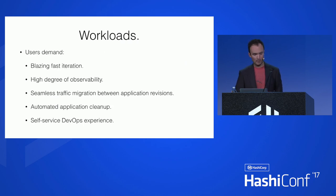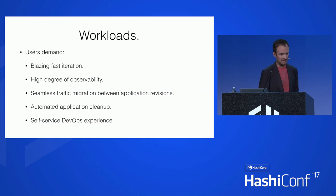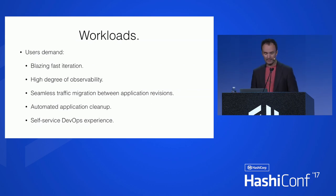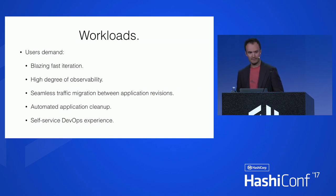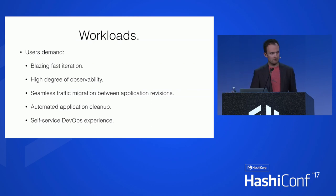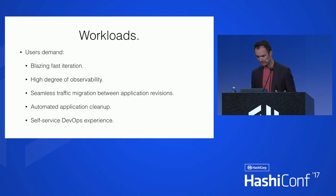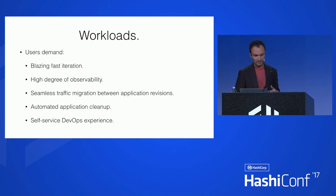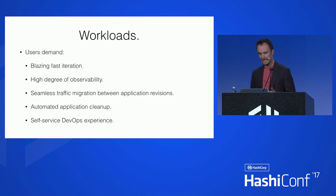It turns out that these users are actually quite demanding. They need very fast iteration — they don't want to wait 20 or 30 minutes for a VM to be provisioned. They want to iterate on models and things in production. They need a high degree of observability — logs, metrics, monitoring, tracing. They need seamless application revision migration: if I'm on version one and I have version two, I need to shift all the traffic and provide observability into that. And last but not least, all of this has to be self-service and completely, absolutely automated — no manual intervention for any of these steps.